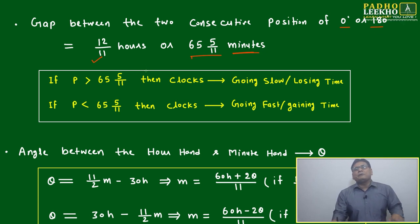Try to remember 65 and 5 by 11 minutes. This will reduce your effort. Once you see a clock question and remember these three or four figures, you'll be able to mark the answer in just one line, in about 10 seconds.